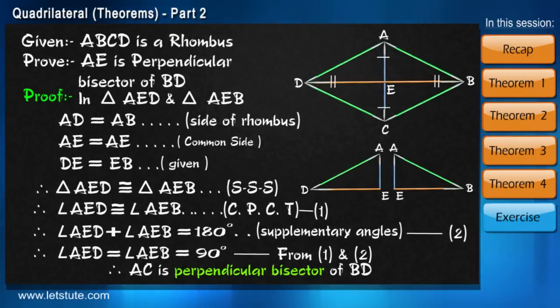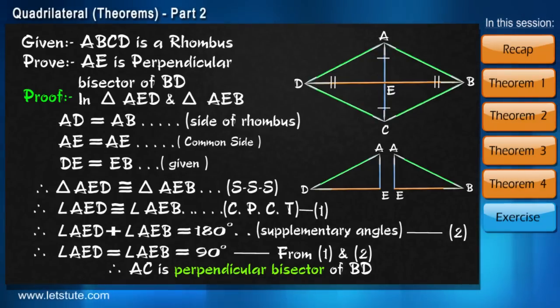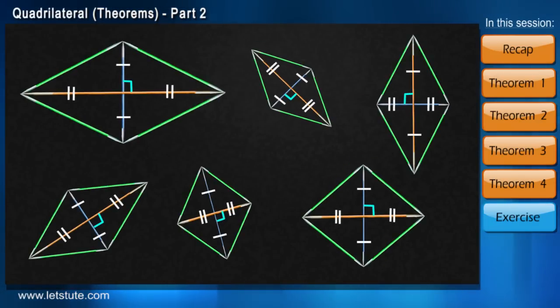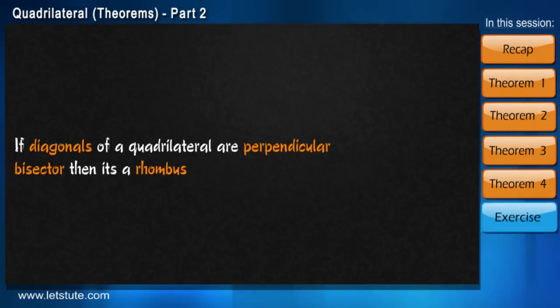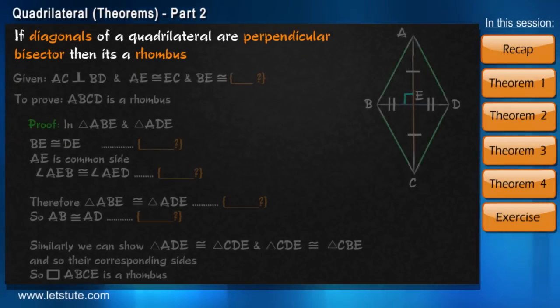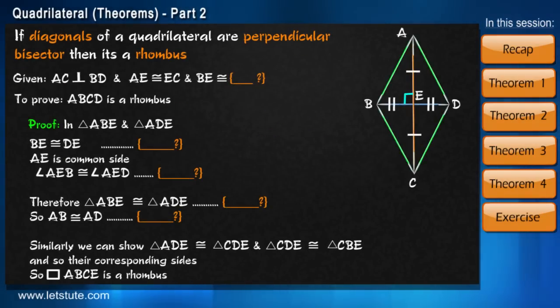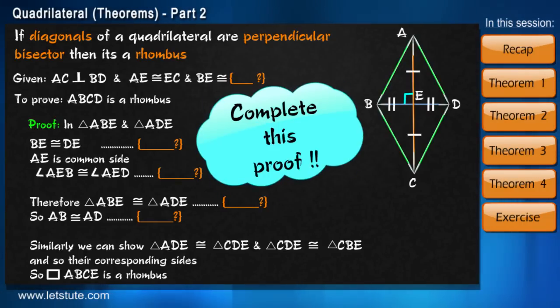Okay. So we proved that diagonals of a rhombus are perpendicular bisector. So if diagonals of any quadrilateral are perpendicular bisector, will it be a rhombus all the time? Or it may be some other shape as well. What do you think? Here is the proof of this statement. But it's not completed yet and it cannot be completed without you. So complete this proof by putting necessary things and write back to us in the comment box, whether you found it simple or not.